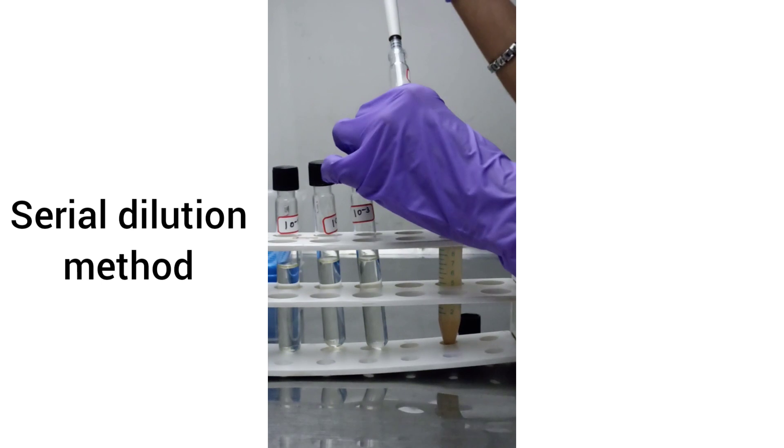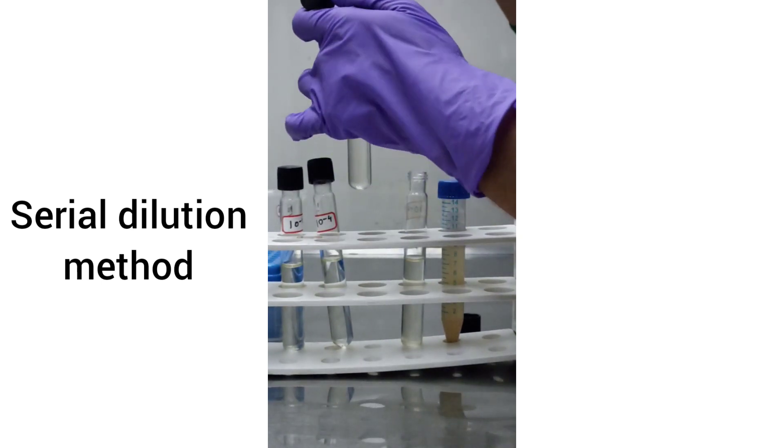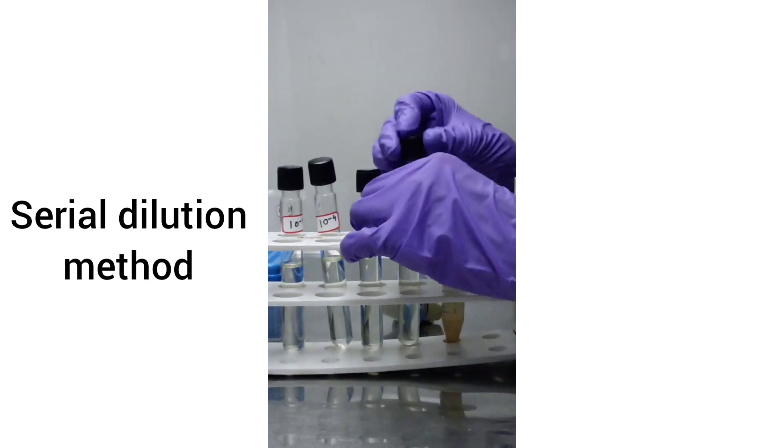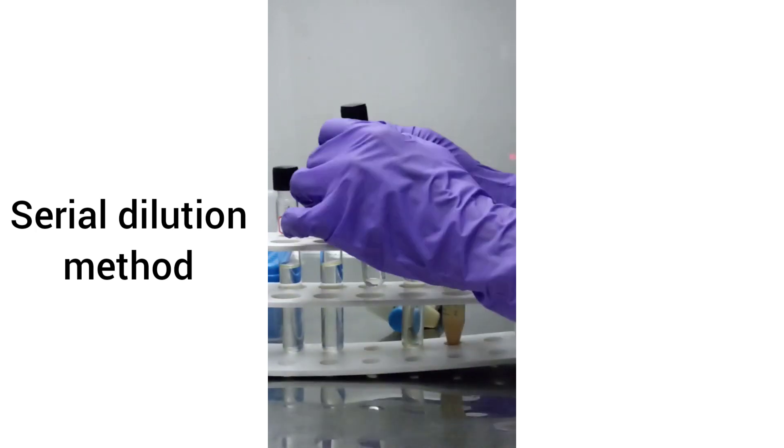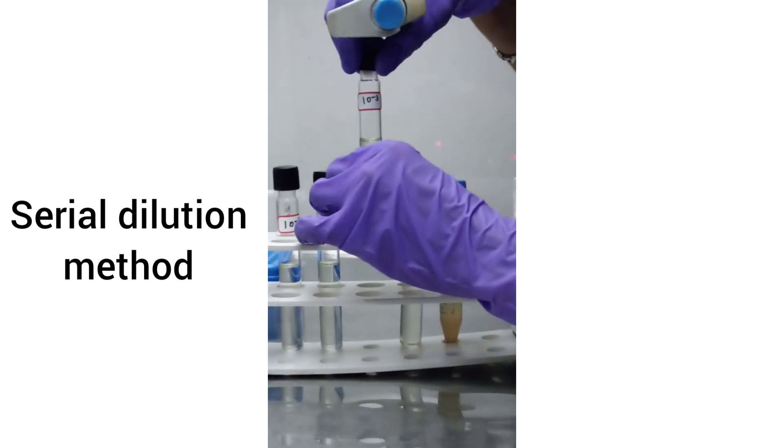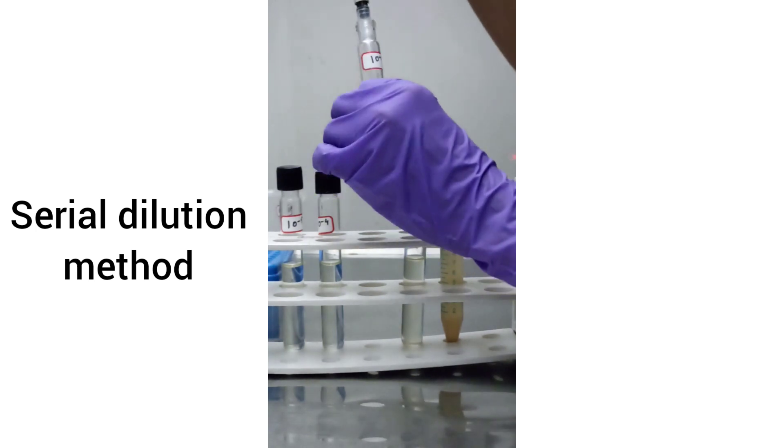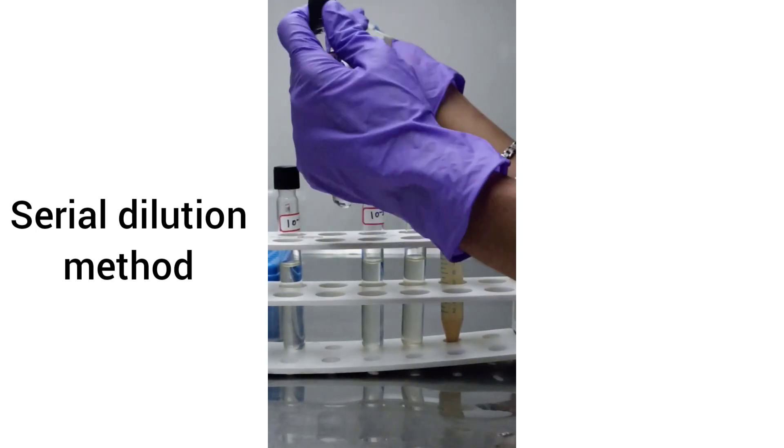Serial dilution of test sample. Take test sample which is 10 times diluted and transfer 1 ml from it to the sterile 9 ml diluent. Similarly carry out serial dilution for the remaining tubes.